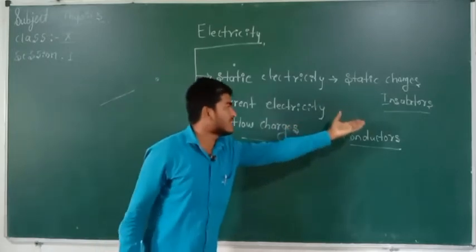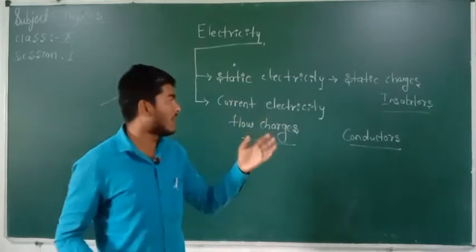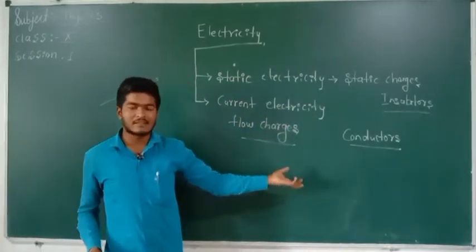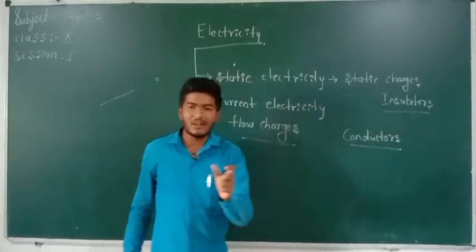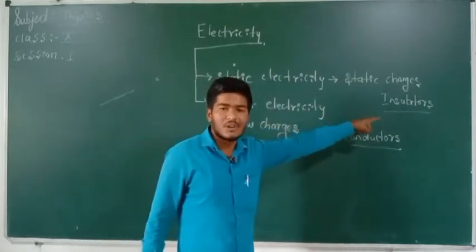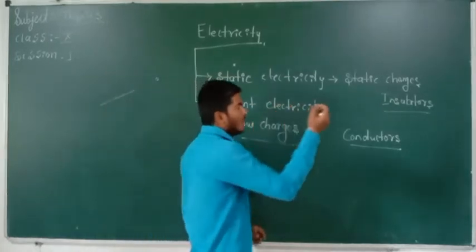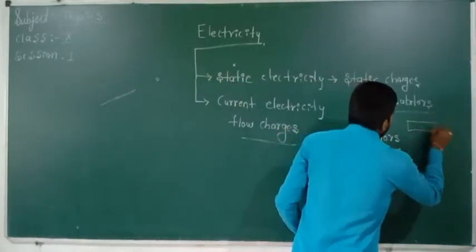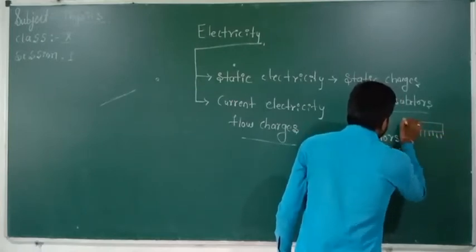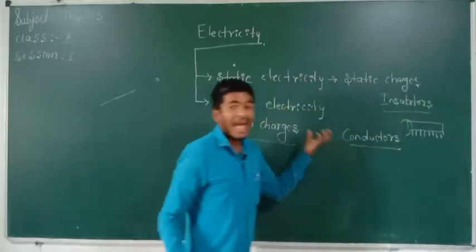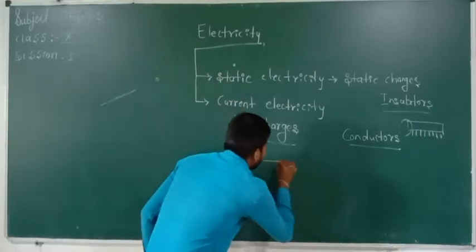What is the difference between insulators and conductors? As you already know from your previous chapters on metals and non-metals: an object which conducts current is called a conductor, and an object which does not conduct current is called an insulator. In static electricity, all the charges are deposited at one point of an insulator — for example, a comb. But in the case of a conductor, all the charges are moving because they conduct electricity — there is a flow of charges.